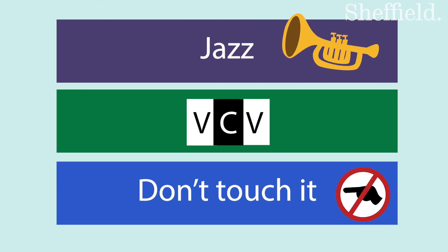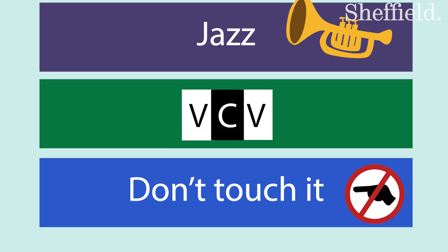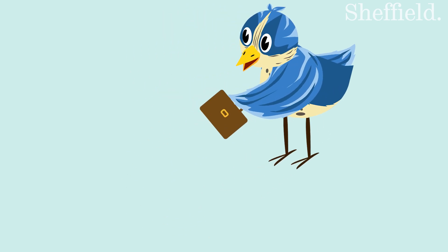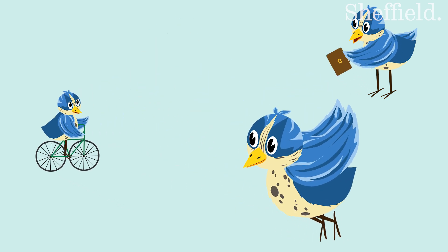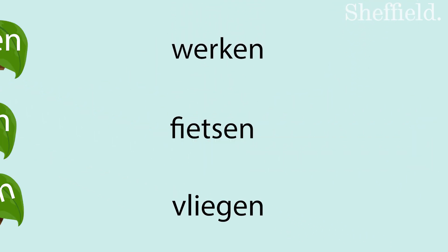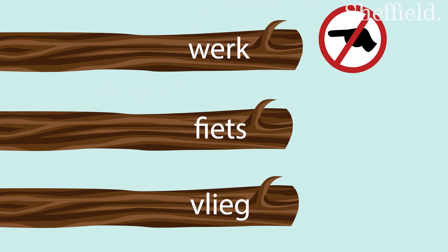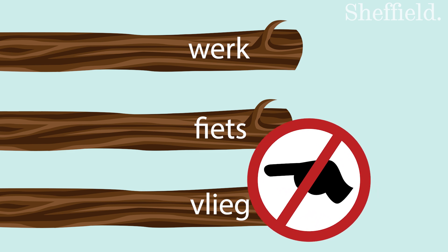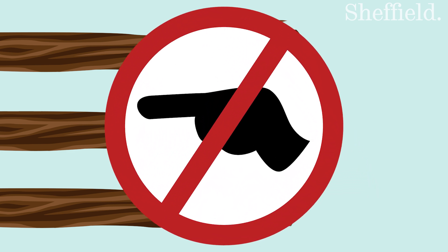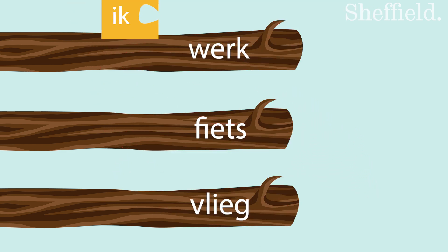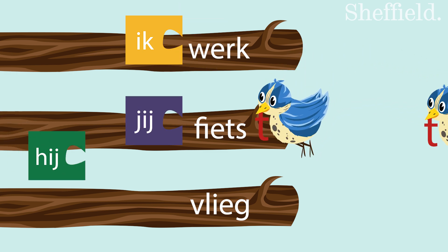Let's go to our final category: the 'don't touch it' category. If the verb doesn't fall into the first two categories, it falls into this one. For example: werken, fietsen, vliegen. Just like in all other cases, we start by taking off the -en, leaving us with werk, fiets, vlieg. And this is where we stop — don't touch it. Werk, fiets, and vlieg are the stems, and we don't need to add or change anything. So: ik werk, jij fietst, hij vliegt.